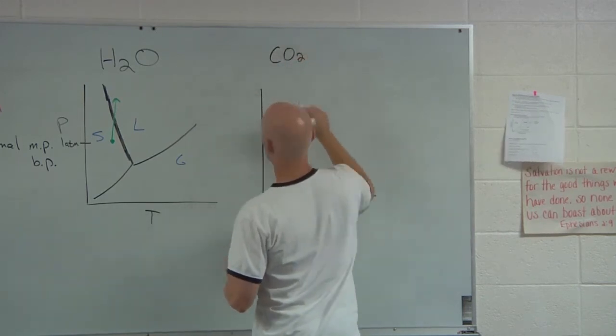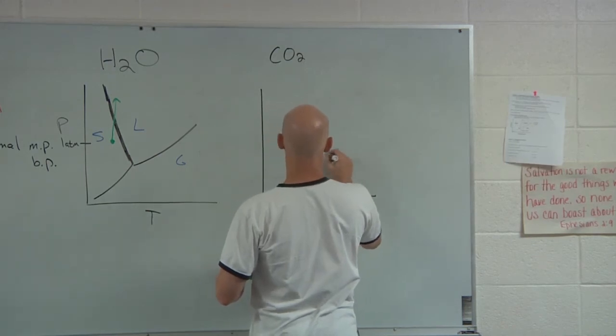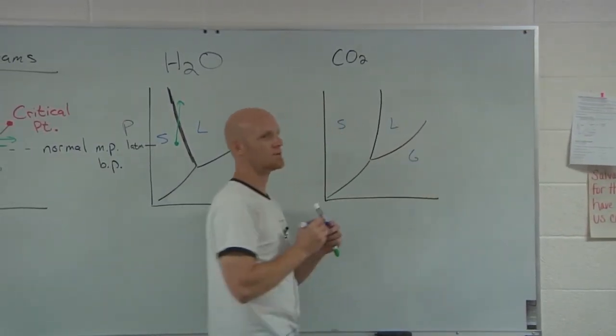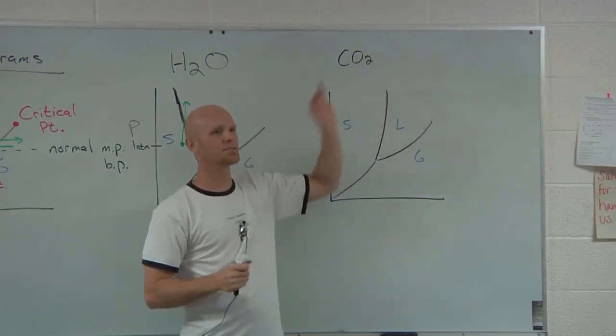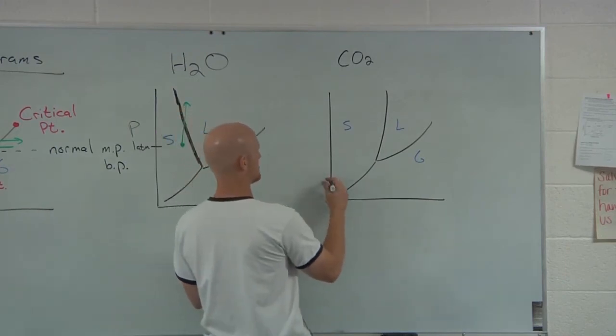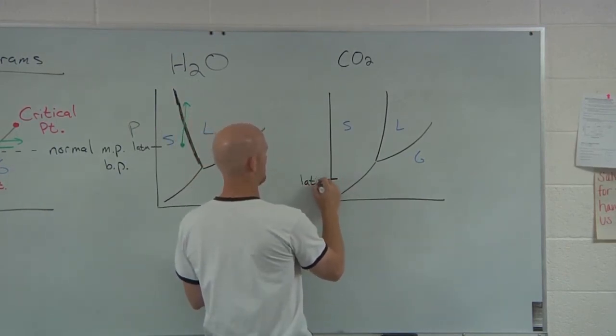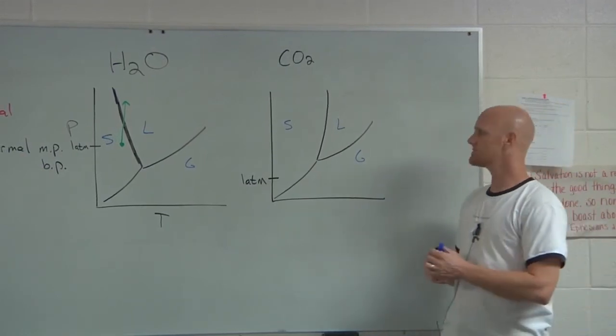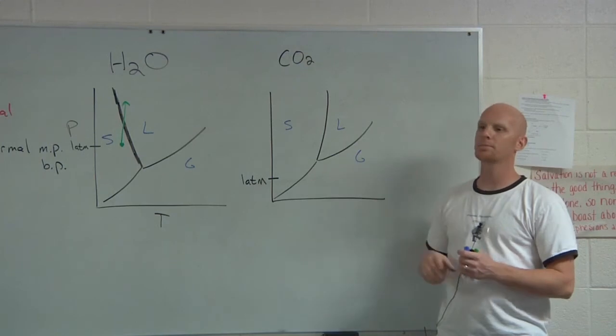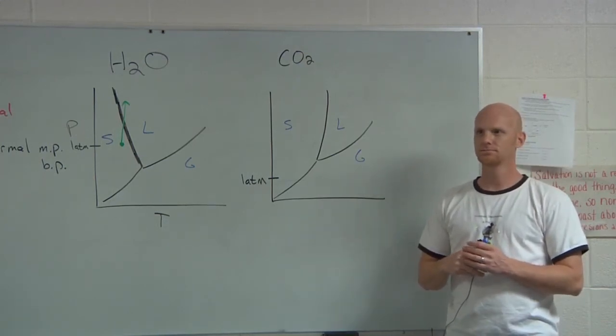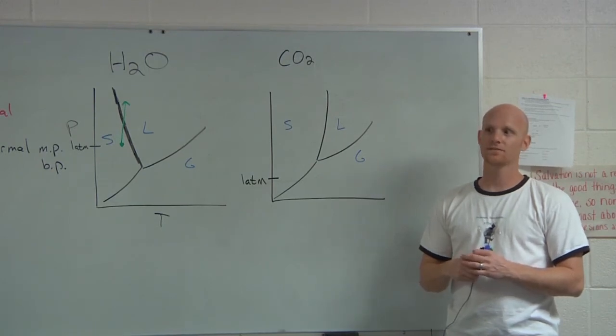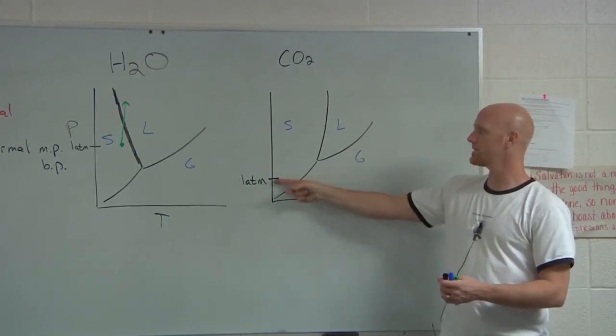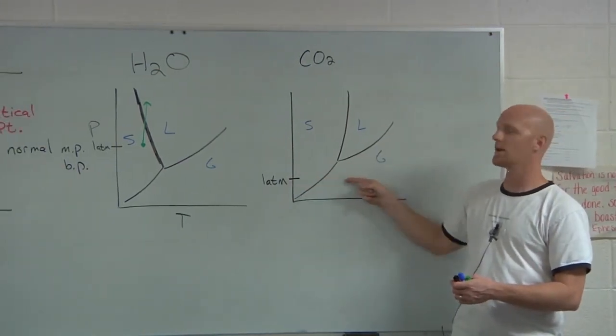The last abnormal compound is carbon dioxide. When you first start making the graph it looks fairly normal: solid, liquid, gas. The solid-liquid line of equilibrium has a positive slope. What sets carbon dioxide apart though is where one atmosphere lies. My question for you is: what is the normal boiling point for carbon dioxide? It's a trick question. What's the normal boiling point for carbon dioxide? It doesn't have one. Normal boiling point is on this line and normal means at one atmosphere. Well, you can't cross the liquid-gas line of equilibrium at one atmosphere for carbon dioxide.